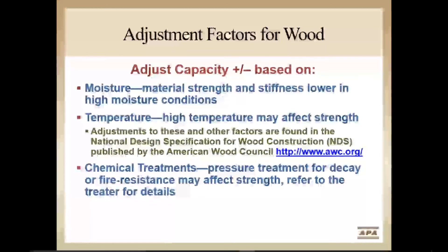Other adjustment factors for wood are based on moisture levels, temperature, and chemical treatments. Higher moisture content lowers the strength and stiffness of wood components. When high levels of moisture are expected, as over indoor swimming pools or in refrigerated structures, design must compensate for the expected higher moisture contents. Also, high temperatures may impact the strength of the wood. The National Design Specification for Wood Construction, or NDS, published by the American Wood Council, lists these other adjustment factors. If wood components have been chemically treated for decay or fire resistance, you should check with the firm doing the treating as to whether the treatment has impacted the strength of the wood component.